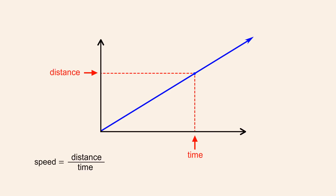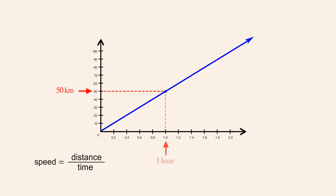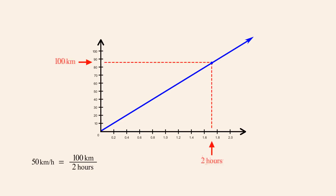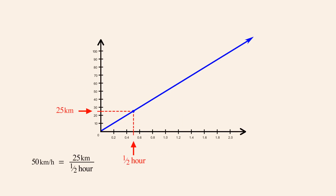For instance, if we travel a distance of 50 kilometers in one hour, then our speed is 50 kilometers per hour. If we travel 100 kilometers in two hours, the calculated speed will still be 50 kilometers per hour. Likewise, at the speed of 50 kilometers per hour, we will travel 25 kilometers in one half hour.